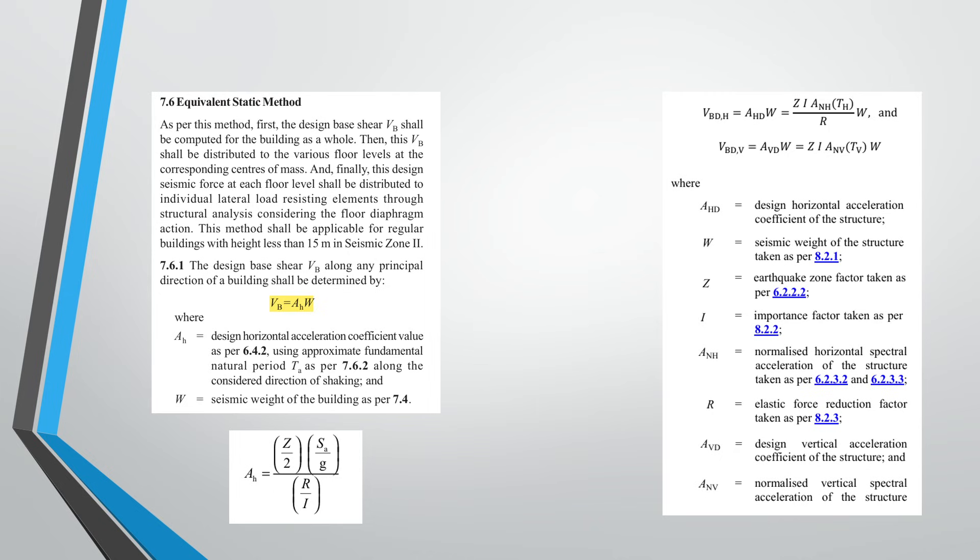Okay, so first we will start with the formula. This is 2016, the formula for the base shear was VB is equal to AH into W, where W was the seismic weight of the structure.